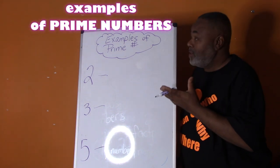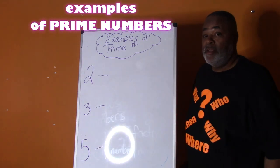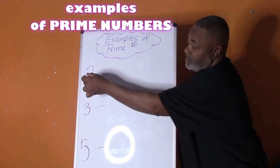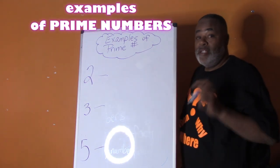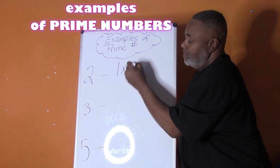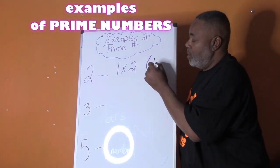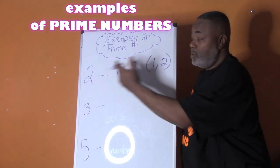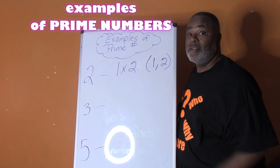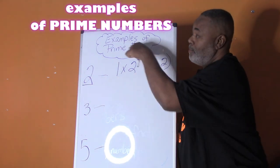Let's look at some examples of prime numbers. I have three numbers here: two, three, and five. When we find the factors, we're looking for the two numbers we multiply to get these numbers. What numbers can we multiply to give us two? That's right — one times two. So our factors of two are one and two. Those are only two factors: one and the number. So two is a prime number.